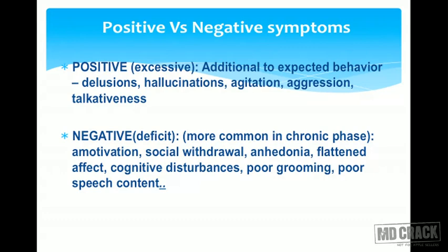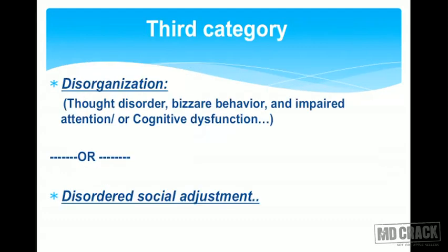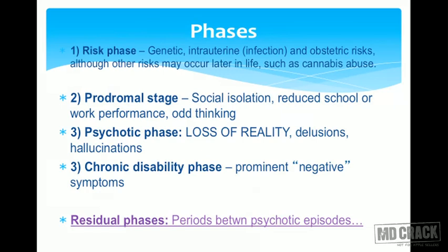A third category described in schizophrenia is disorganization, or disordered social adjustment, which involves thought disorder, bizarre behavior, impaired attention, and cognitive dysfunction.